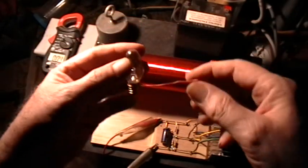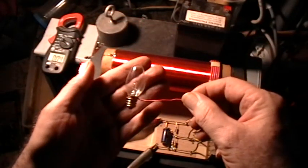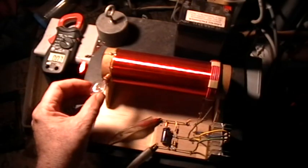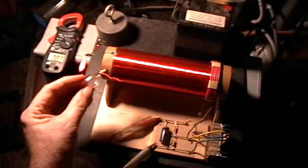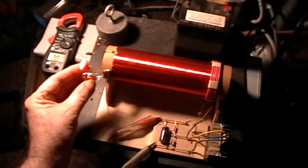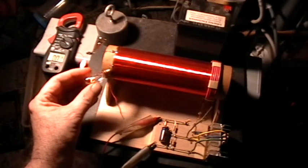Here's a little incandescent bulb. This is a 120 watt night light bulb, 5 watts. You see that? One wire.